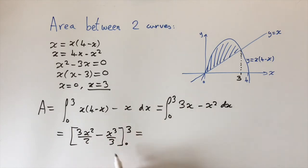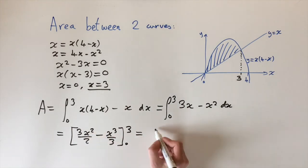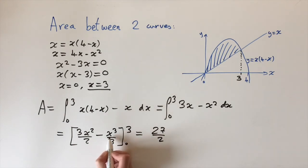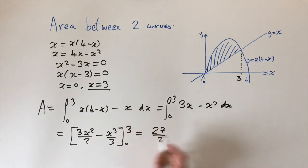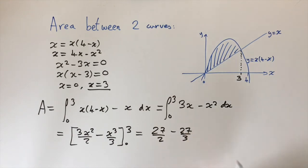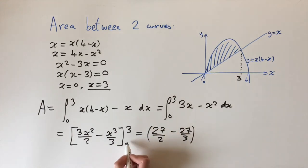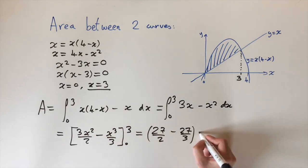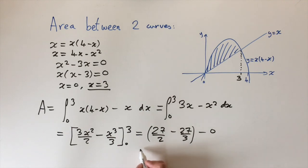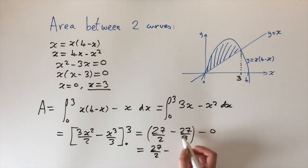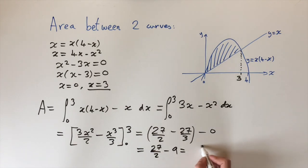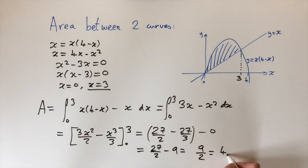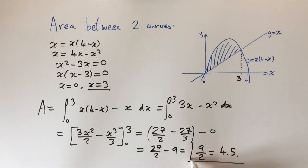Substituting x = 3: (3 × 27)/2 − 27/3 = 27/2 − 9. Substituting x = 0 gives zero for both terms. Simplifying: 27/2 − 9 = 27/2 − 18/2 = 9/2, which is 4.5. So the area between the two curves in the shaded region is 9/2, or 4.5 square units.